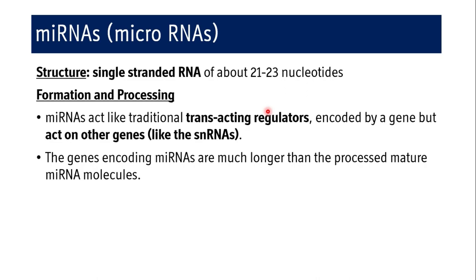What is meant by trans-acting regulator is that the gene for mRNA is different and the gene for microRNA is different. When microRNA is encoded by a gene, that gene is different, and they act on other genes which produce mRNA. The genes encoding microRNAs are much longer than the processed mature miRNA molecules because of splicing of introns and untranslated regions at 5' and 3' ends. But here the difference is much more significant because the gene is very long and the mature miRNA molecules are very small.